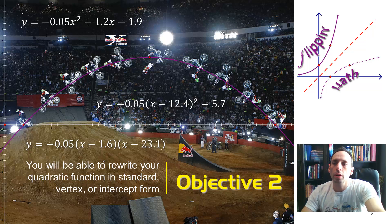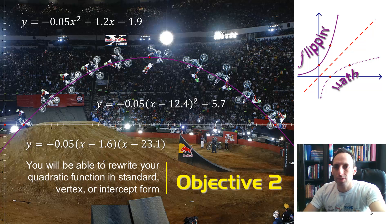For example, maybe we want it to be in standard form, y equals ax squared plus bx plus c. That one's going to be the easiest one to do. We'll just probably have to do some foiling and expanding out and whatnot.